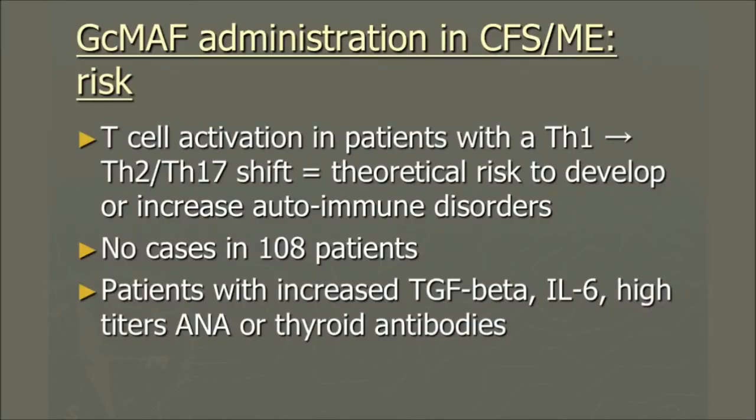Normally in my large cohort, with about 4,000 patient contacts per year, we have a few people who develop autoimmune thyroiditis, which is completely normal in this group. This year I had two patients with autoimmune thyroiditis, which does not fall outside the normal rate we see. For patients with increased TGF-beta activating Th17, high IL-6, and high titers of ANA or thyroid antibodies, we temporarily exclude them from receiving GC-MAF until we know more.